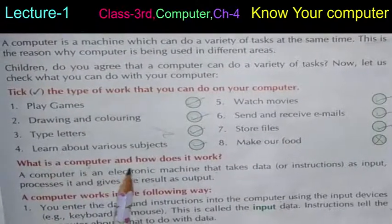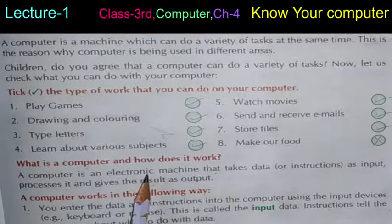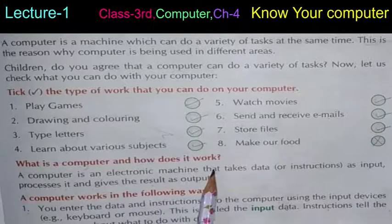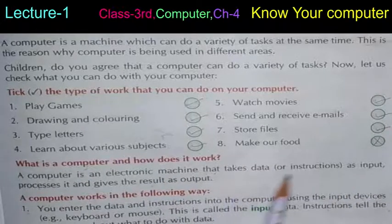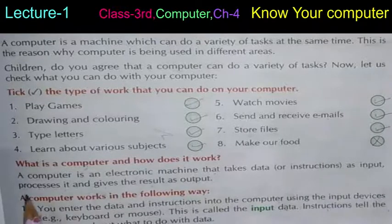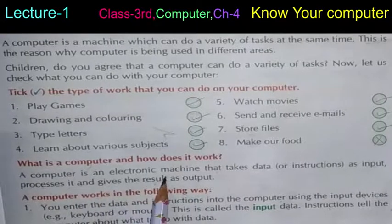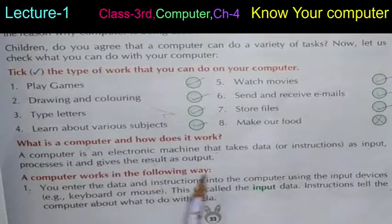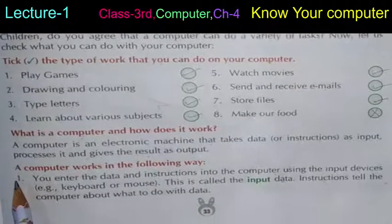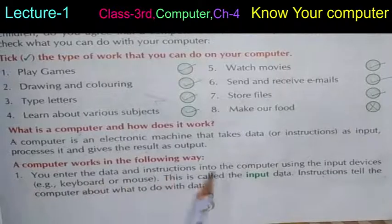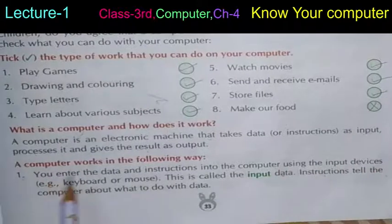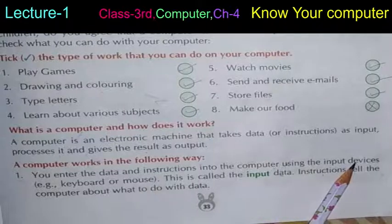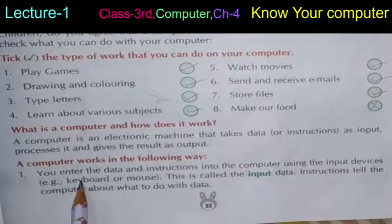What is a computer and how does it work? A computer is an electronic machine that takes data as input — jo hamare data aur instructions ko input ke roop mein leti hai — processes it, and gives the result as output. A computer works in the following ways. First, you enter the data and instructions into the computer using input devices — keyboard and mouse. This is called input data.